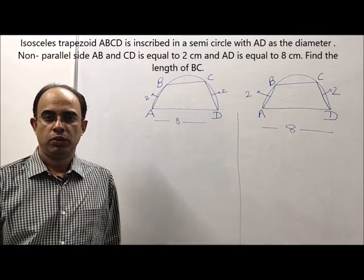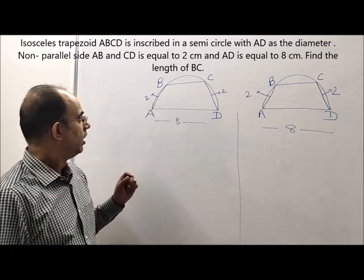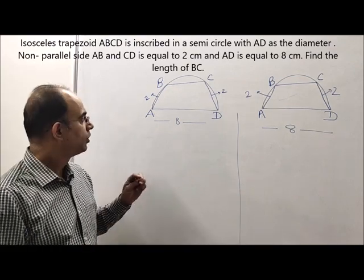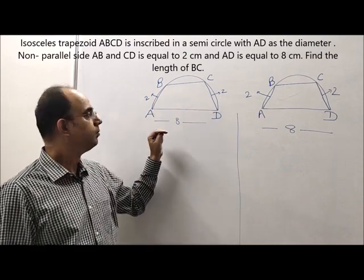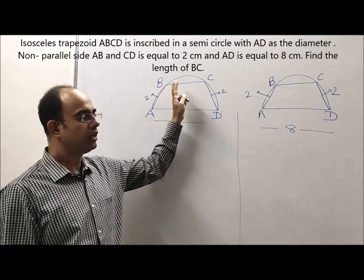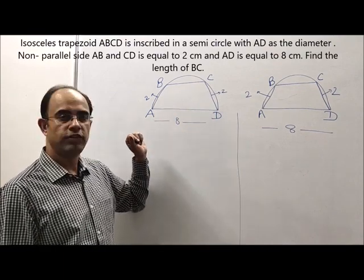Good morning students, today we are going to solve a question on geometry. I'll just read the question to you. ABCD is an isosceles trapezium which is inscribed in a circle. AD is the base of the trapezium.